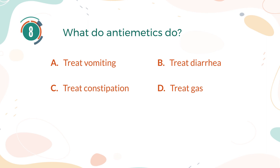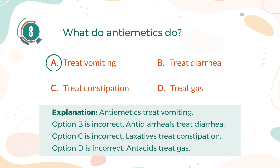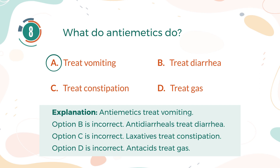The correct answer is A. Treat vomiting. Explanation: Antiemetics treat vomiting. Option B is incorrect. Antidiarrheals treat diarrhea. Option C is incorrect. Laxatives treat constipation. Option D is incorrect. Antacids treat gas.